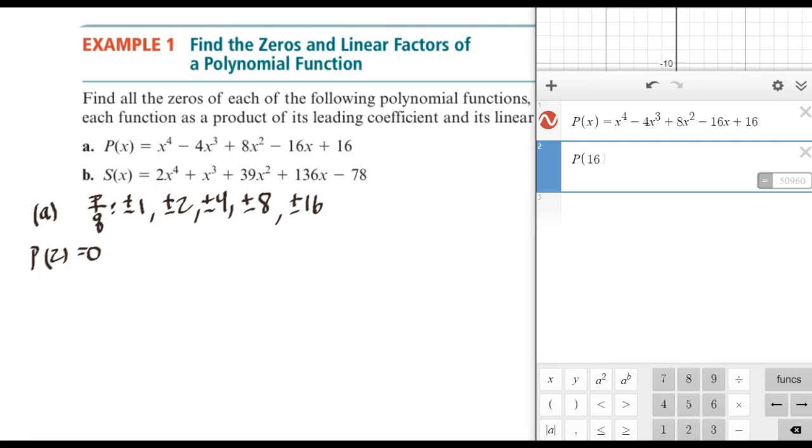And we had a degree 4 polynomial. So the multiplicity for each of those could only be one. Because if we had more than one multiplicity, then the degree, it would go beyond the degree. And we know that there's only up to the degree of number of zeros.